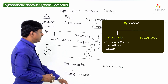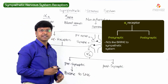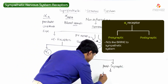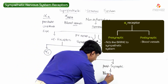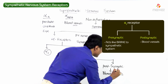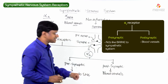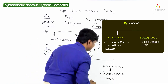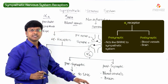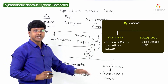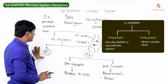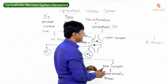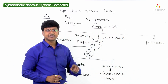The postsynaptic alpha 2 receptors are present within the blood vessels and also within the brain. That is the complete story of alpha receptors — alpha 1 and alpha 2.